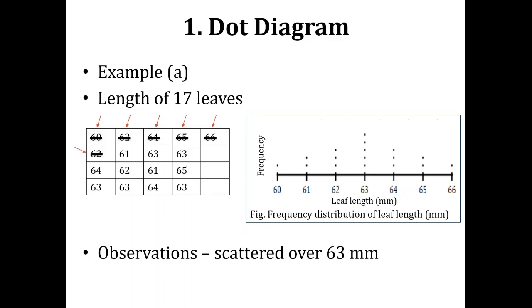You must also give a caption — for example, 'This figure represents the frequency distribution of leaf length.' In the caption, you describe the variable plotted, which is leaf length, and what attribute is being described, which is the frequency showing how many times a specific measurement is repeated in your data.